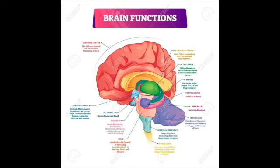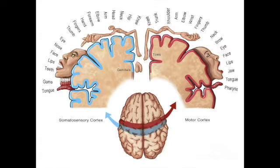Basal ganglia disorders lead to movement disorders like dyskinesias, dystonias, Parkinsonism, Huntington's disease, or behavioral issues like Tourette's or OCD. Extrapyramidal symptoms include: dyskinesia (involuntary spasms or abnormal movements), dystonia (sustained contraction of antagonistic muscles causing twisting or abnormal posturing like torticollis or writer's cramp), myoclonus (sudden brief involuntary jerking — not suppressible), and tics (sudden repetitive non-rhythmic movements that are suppressible, unlike myoclonus). Tourette's syndrome is an example of tics.